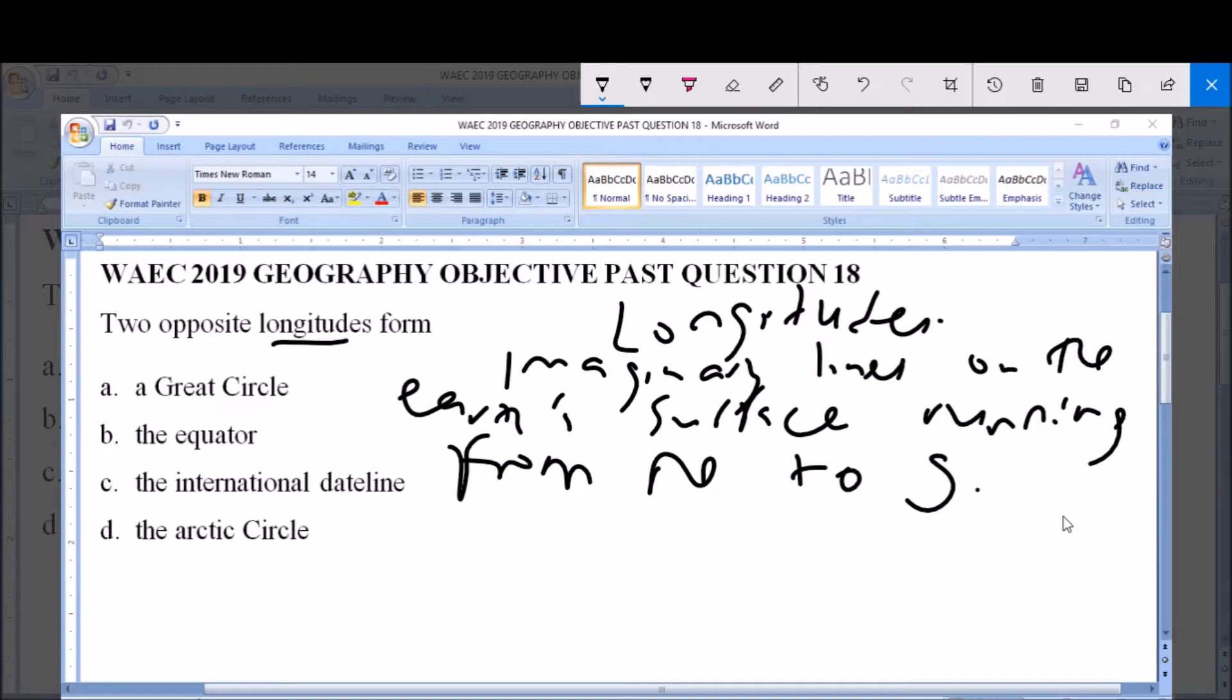If the Earth's... let's use this small diagram. If this is the Earth's surface, longitude lines run from north to south this way, run from north to south.